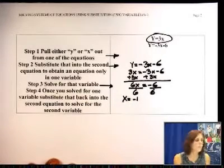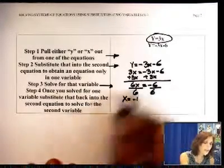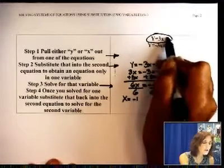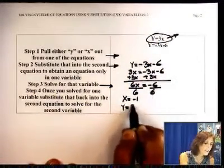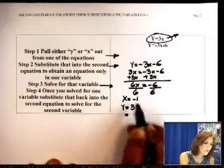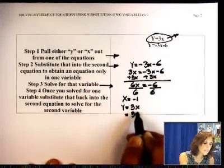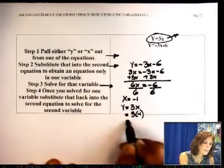So I solved for one of the variables. Now substitute it back to the equation. What was my equation? This very first one. That's the easiest. Y equals 3x. So I can put negative 1 instead of x. And I get negative 3.